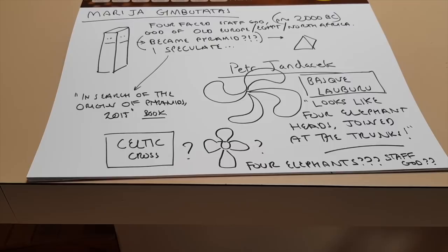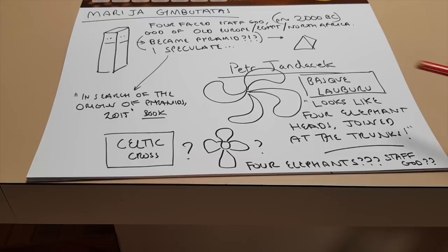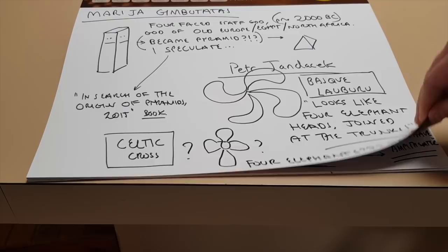So I actually speculated that the four-faced God actually became a pyramid. And that was in my book, In Search of the Origin of Pyramids. Now, a colleague called Peter Jandacek, I've mentioned him a few times. He's written some excellent papers, which you can read for free online. He told me about this thing called the Basque Laubourou, which is that. And he said, it looks like four elephant heads joined at the trunks. So a cross is actually a way of describing a picture of the universe.